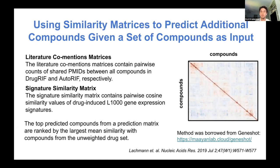There are two types of similarity matrices used for predictions. The first is the literature co-mentions matrix, created from DrugRIF and AutoRIF, containing pairwise counts of shared PubMed IDs between all small molecules. The second is the signature similarity matrix, which contains pairwise cosine similarity of drug-induced L1000 gene expression signatures for thousands of approved, preclinical, and experimental small molecules. The top predicted compounds are ranked by the largest mean similarity with the unweighted drug set.